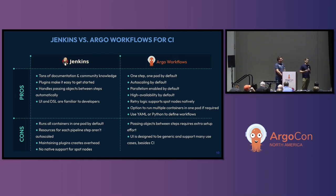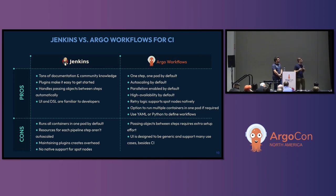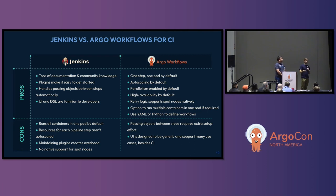From a UI/UX standpoint, Jenkins is great and built for a CI experience. However, Argo workflows is more generic and can be used for data and other infrastructure automation. If anybody is going to migrate, there's a bit of a UX difference. But all in all, we really felt the auto-scaling and parallelism benefits were great going to Argo. Even though we had to figure out how to pass objects between steps using volumes or artifacts, that extra effort in the beginning actually ends up benefiting you by achieving better scale and efficiency in the pipeline.